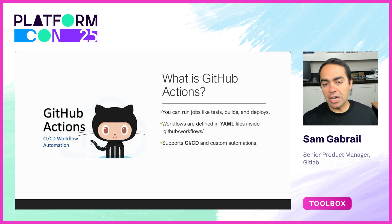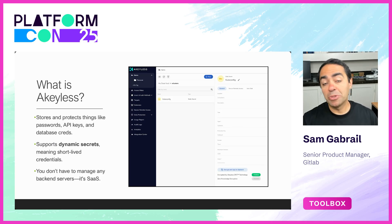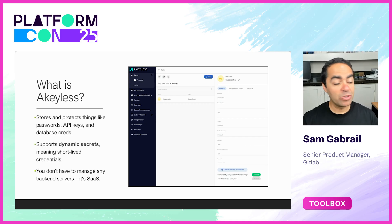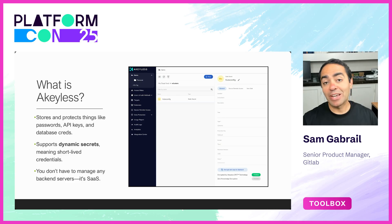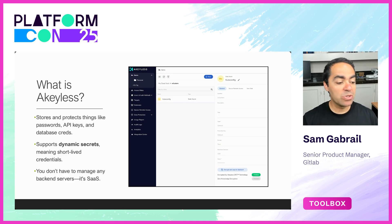Akeyless is a cloud-based secrets manager. If you're familiar with HashiCorp Vault, Akeyless does similar things — it stores and protects things like passwords, API keys, and database credentials. It supports dynamic secrets, meaning short-lived credentials that are just-in-time. You don't have to manage any backend servers because it's a SaaS offering, and we're going to use it for our kubeconfig for our vClusters.